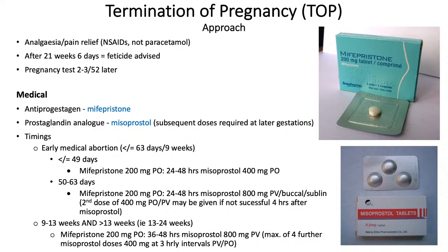As of 2018, medical TOP can be taken at home, as women previously often took medication in hospital and bled on the way home. Two medications are involved: first an anti-progestogen such as mifepristone, which blocks progesterone effects, makes the cervix easier to dilate, and promotes uterine contractions when exposed to prostaglandins. Then prostaglandin analogues such as misoprostol are given, which mimic prostaglandins to induce uterine contractions and soften and dilate the cervix. With misoprostol, subsequent doses are often required at later gestations.